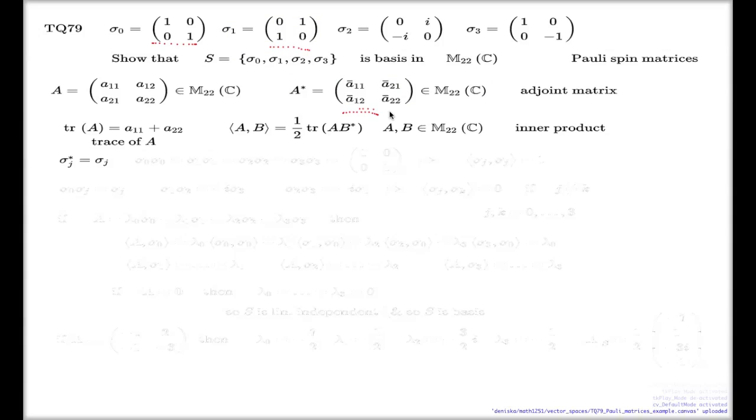If you adjoint this one, again, nothing will change. Because i and negative i will swap places, but then you have to apply complex conjugate, and minus will become plus, plus will become minus. If you take the adjoint of this one, nothing will change. In fact, matrices which do not change when you take the adjoint are called self-adjoint matrices, and Pauli matrices are a good example of self-adjoint matrices.